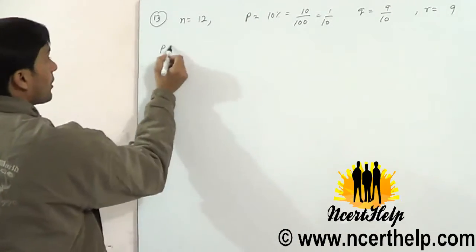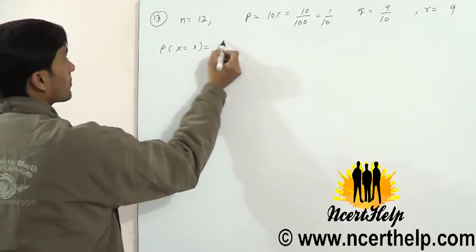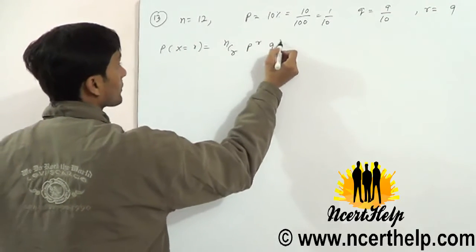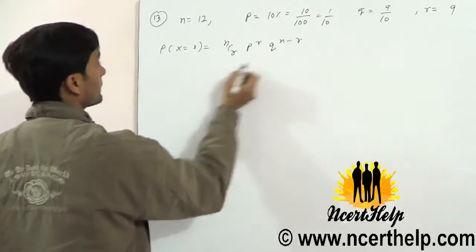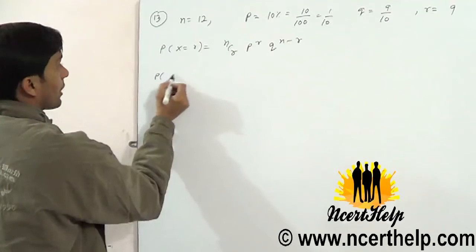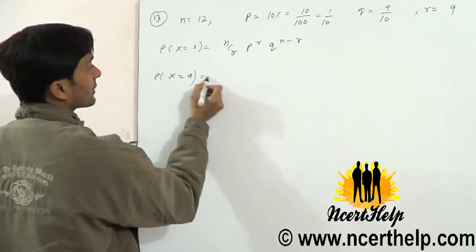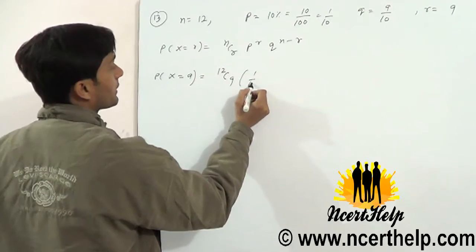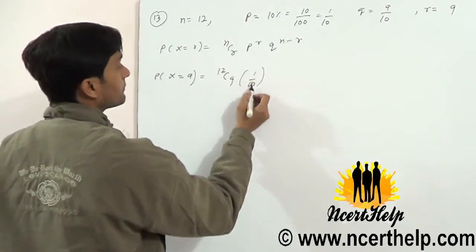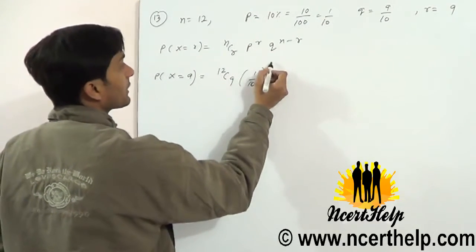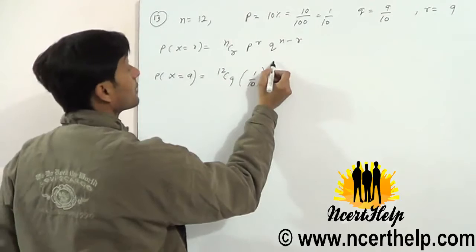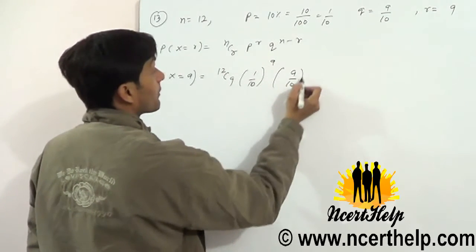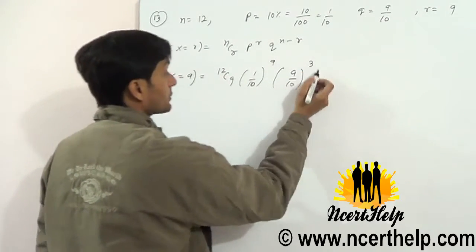The probability of x equal to r uses the formula nCr × p^r × q^(n-r). So we have 12C9 × (1/10)^9 × (9/10)^3.